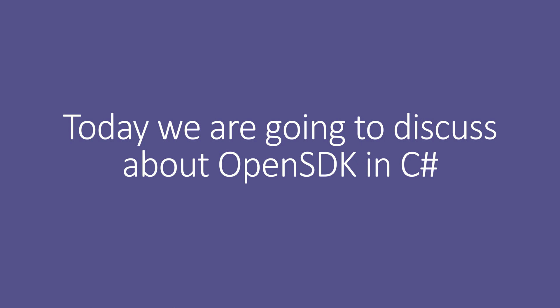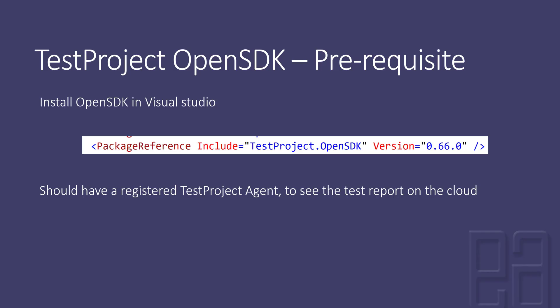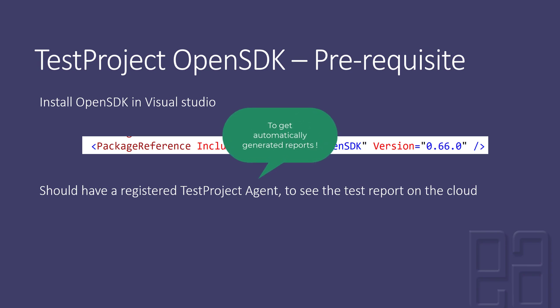To get started with test project's C# open SDK, we need to install the NuGet package 'TestProject.OpenSDK' in Visual Studio. The latest version at the time of recording is 0.66.0. You also need a registered test project agent to see test reports on the cloud, and a developer token to communicate with the test project platform. That's the minimal requirement to convert our existing code to use the test project ecosystem.